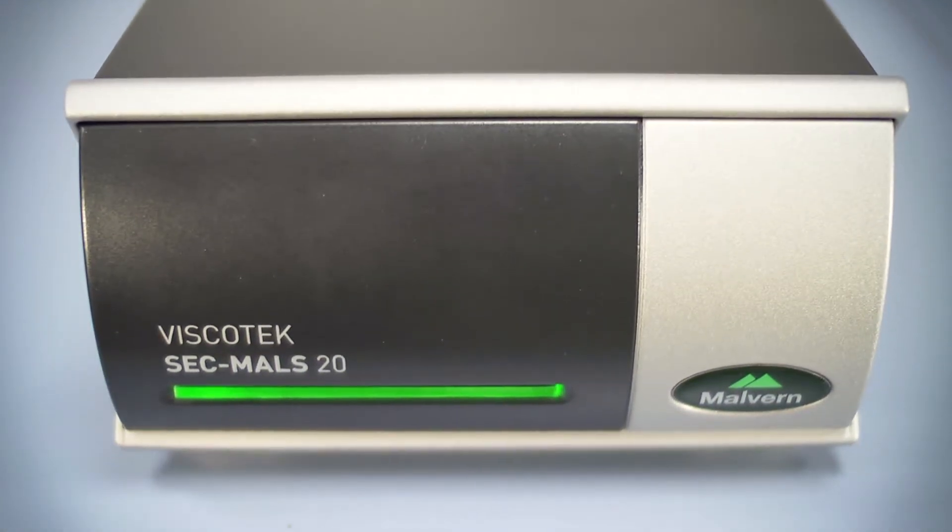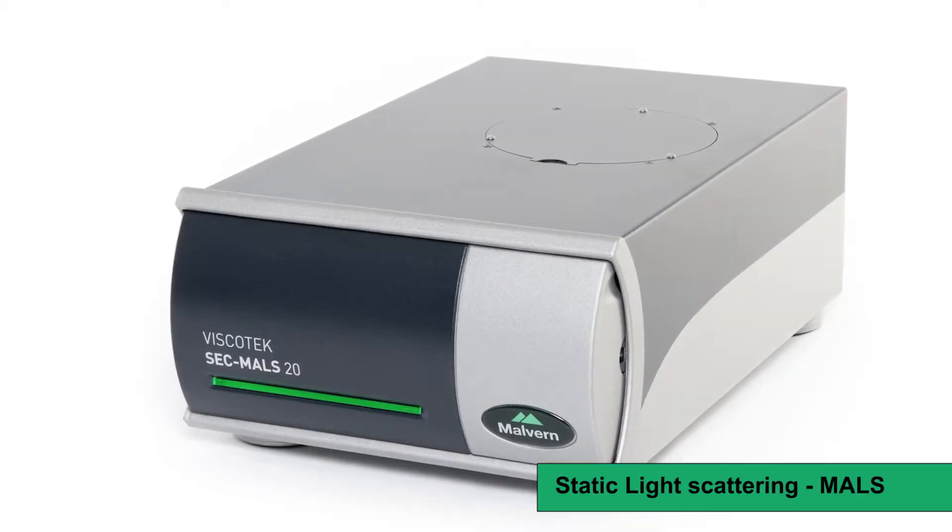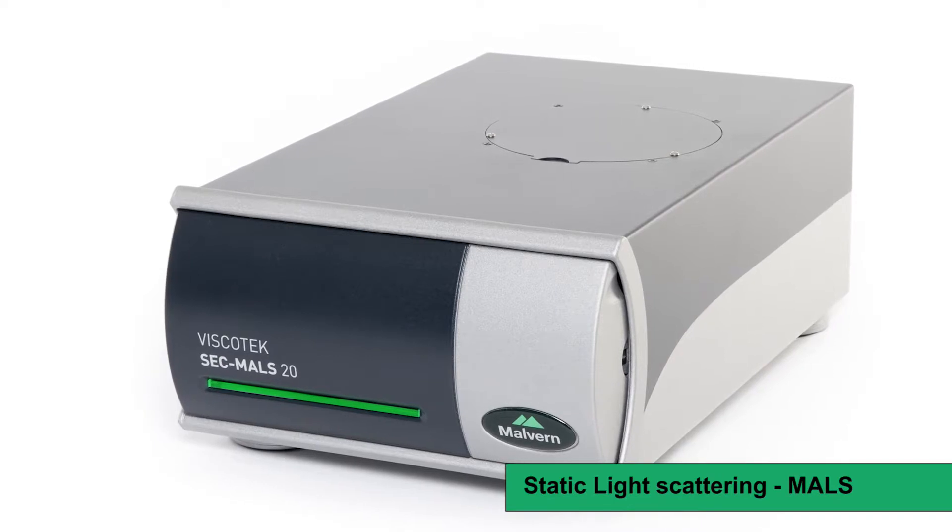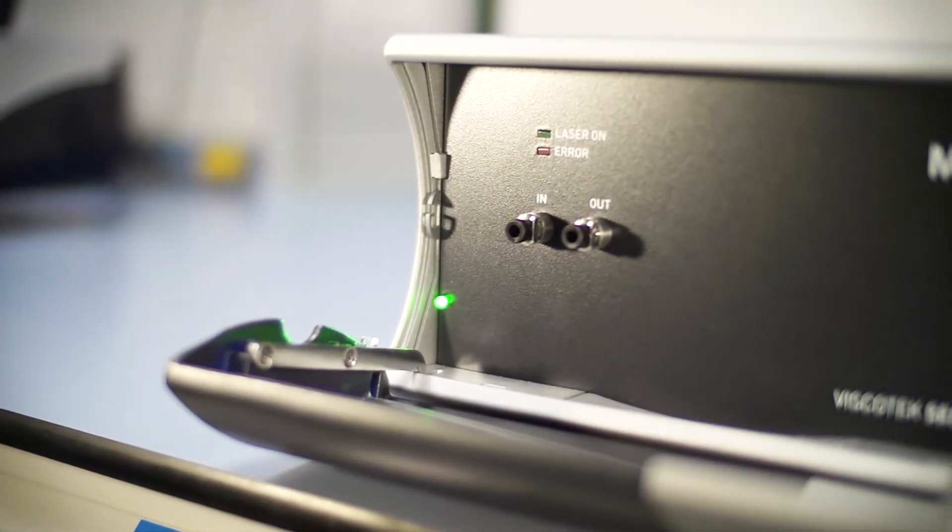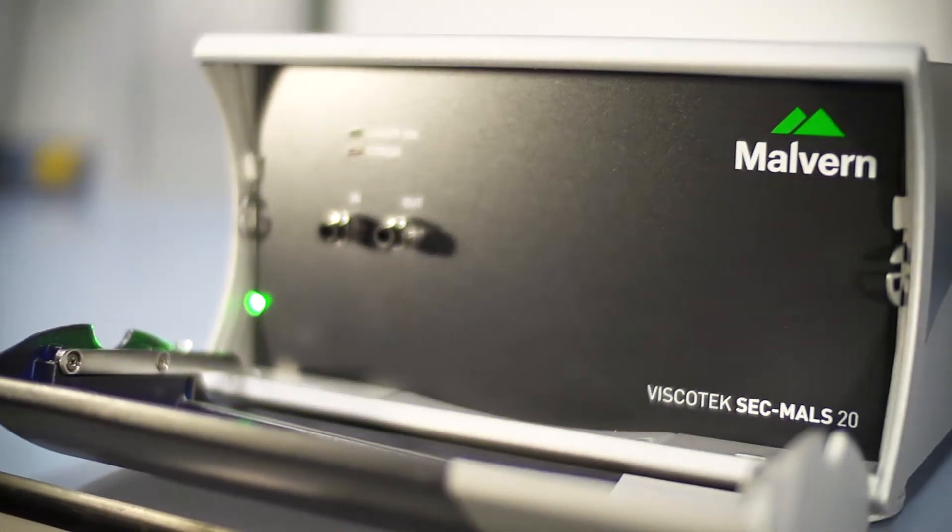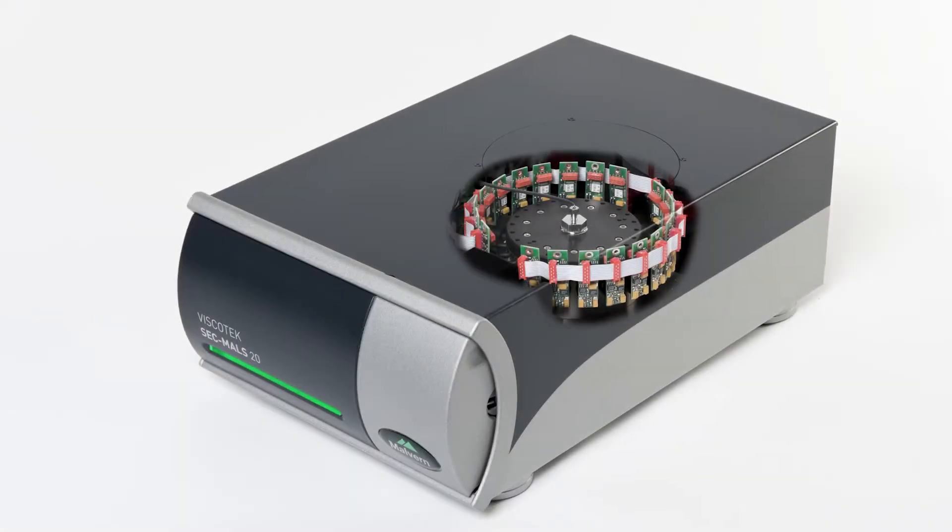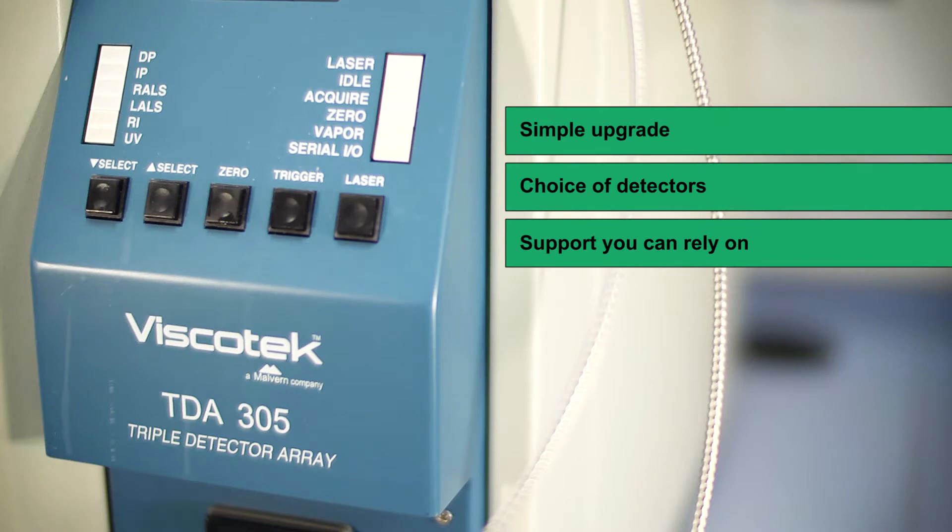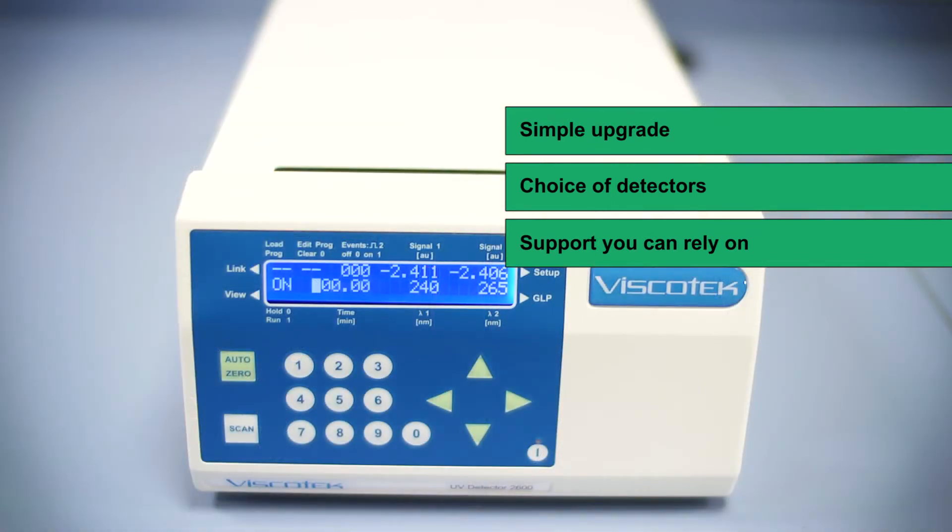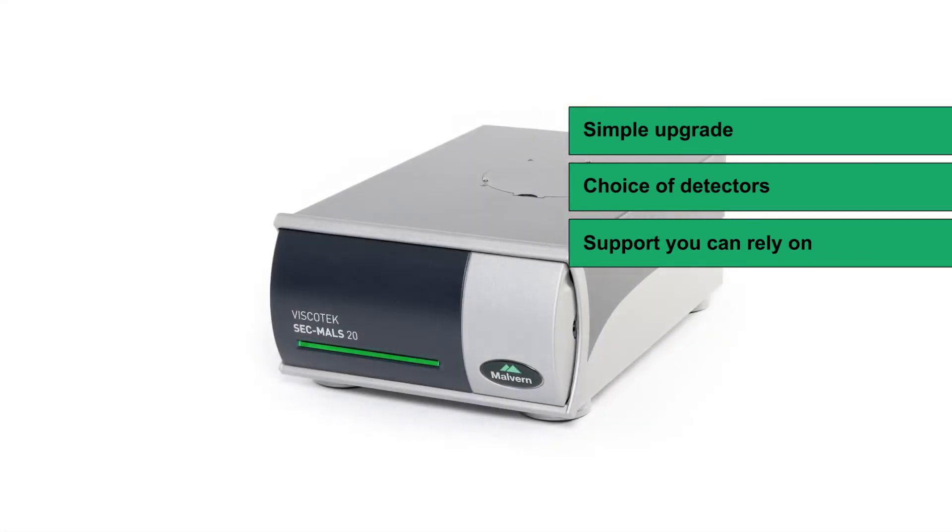The SECMELS 20 is a modular multi-angle light scattering detector that can easily be combined with any existing SEC system for absolute molecular weight and size. The key to the performance of the SECMELS 20 is the vertical flow cell with radial optics containing 20 angles of detection. Upgrade your existing system to unlock the full potential of your GPC SEC experiments.